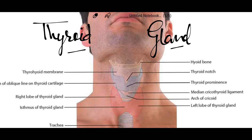Welcome back. Today I am discussing the thyroid gland. The thyroid gland is a type of endocrine gland which is very rich in blood supply and is situated at the lower front part of the neck. Its functions include regulating the basal metabolic rate, stimulating somatic and psychic growth such as mental growth and muscle growth, and it plays an important role in calcium metabolism.